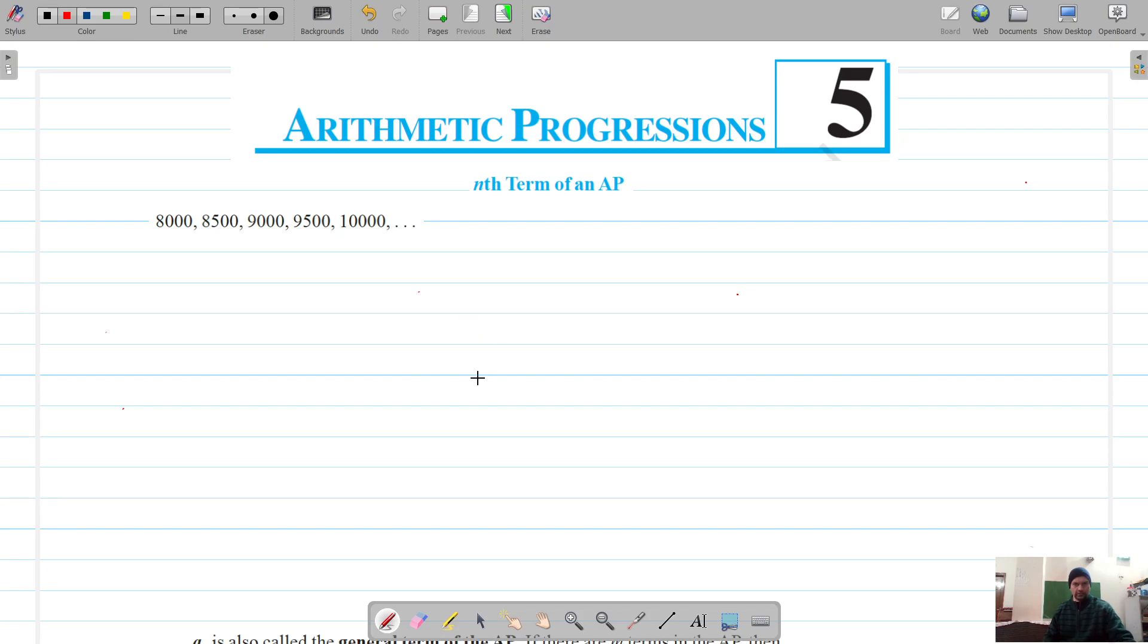Coming on to exercise 5.2, let's see what is the nth term of an AP. Suppose these are the list of numbers that we have: 8000, 8500, 9000, 9500, 10000. Obviously 8500 minus 8000 is 500, 9000 minus 8500 is once again 500, and 9500 minus 9000 is also 500.